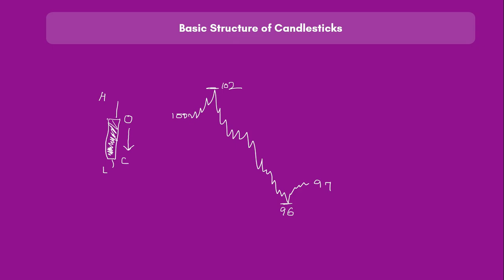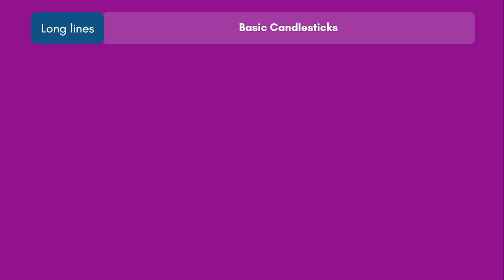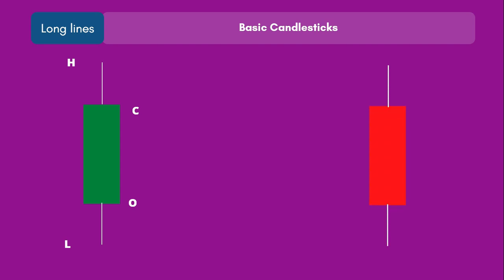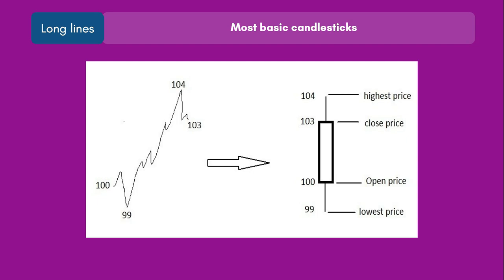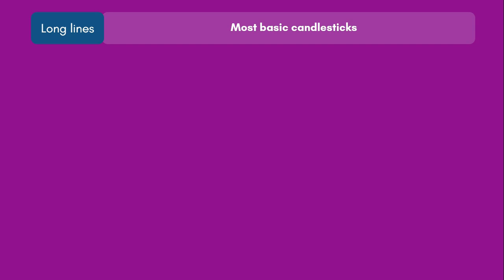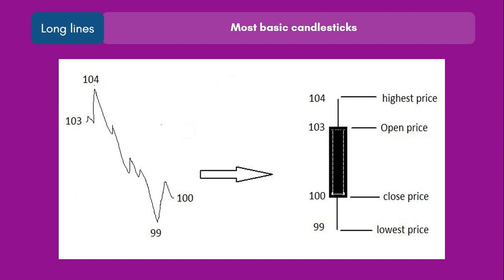These are the most basic types of candlesticks, also called long lines. A positive long line has open below close, with high and low at the tips of the upper and lower tails respectively. A negative long line has opening above close. A positive long line indicates a bullish signal and a negative long line indicates a bearish signal. All four values — open, close, high, and low — are represented in a single candle.